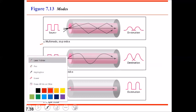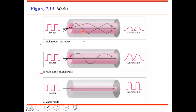In multi-mode step index, the density of the core is constant throughout. The density of the cladding is lighter than the density of the core, so the core is more dense and the cladding is less dense, but the cladding is of uniform density. Since the density of the core is the same, light rays move along a straight path.